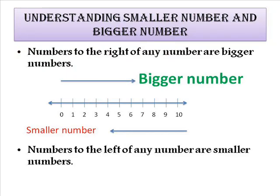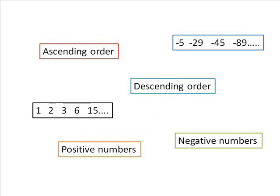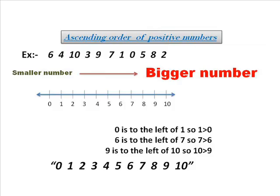Now let us try to understand smaller number and bigger number on a number line. Any number on a number line which is to the right of any number is bigger number, and to the left of any number is smaller number. I hope you understood what is smaller number and bigger number. Now let us understand ascending order and descending order of both positive and negative numbers through an example.